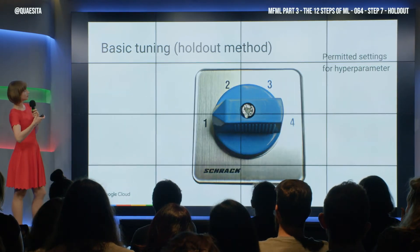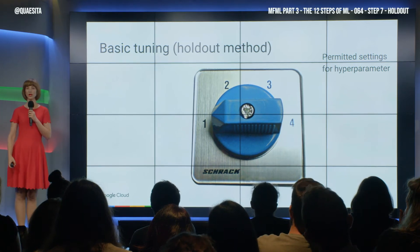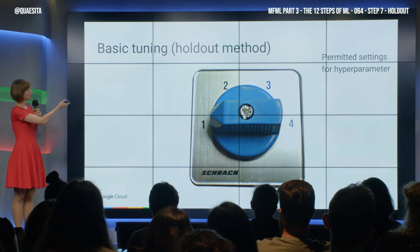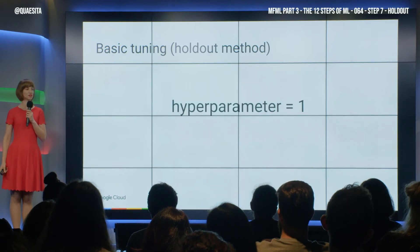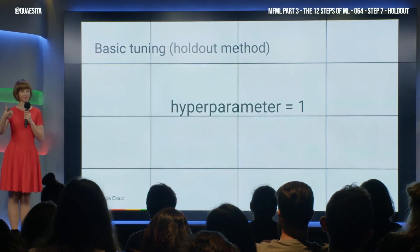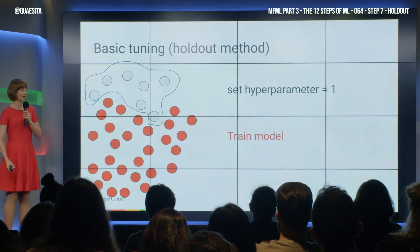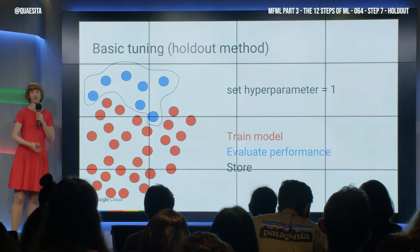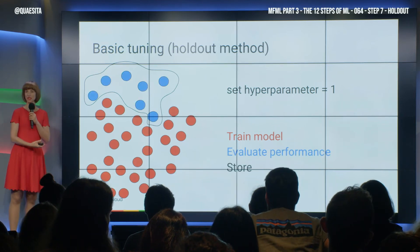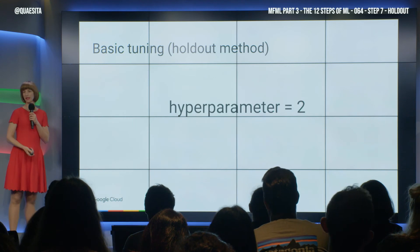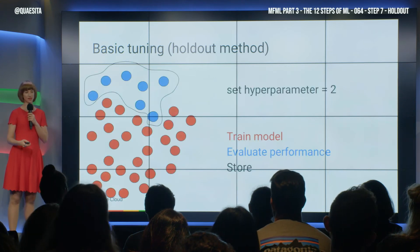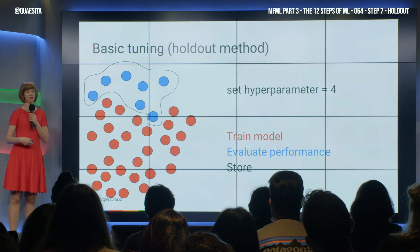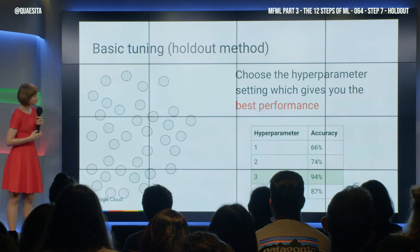What do we do? We're going to use a good old trusty for loop. Begin with your hyperparameter set to its lowest possible setting. Now train your model with that setting, evaluate it on this tuning dataset, and store the result. Then next setting, same thing; next setting, same thing; next setting, same thing — tally up your results.